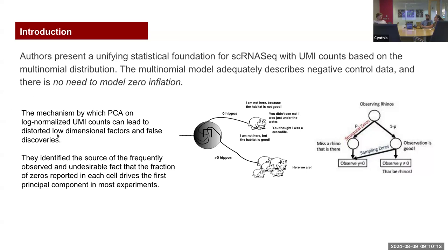The next argument is that the mechanisms by which PCA on the log-normalized UMI counts can lead to distorted low-dimensional factors that drive false discoveries. This is a way to say that we have over-dispersion, which can inflate confidence in the model, violating the model's assumptions. They identified that the source of the frequent observation of undesirable artifacts — the fraction of zeros in each cell — drives the first principal component in most single-cell experiments.